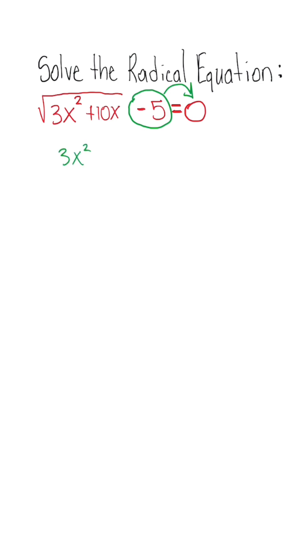So we have radical 3x squared plus 10x is equal to positive 5. Now we're going to get rid of the radical by squaring both sides. The radical and exponent cancel out, leaving us with 3x squared plus 10x equals positive 25.